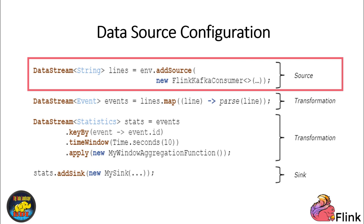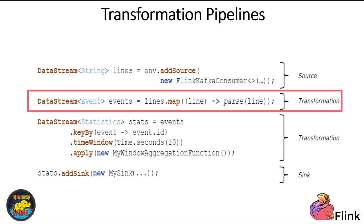Once you have a data source in place, you can define a series of transformations on the Datastream. These transformations allow you to process the incoming data — for example, you can parse raw strings and convert them into meaningful Java objects tailored to your domain. You also have the flexibility to add custom processing functions to the pipeline. These functions conform to a specific interface, enabling you to implement your own logic for data processing. Moreover, these transformations provide access to Flink's fault-tolerant state management, ensuring data consistency and reliability.